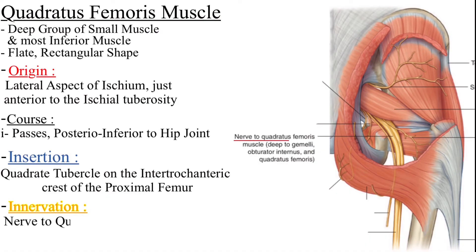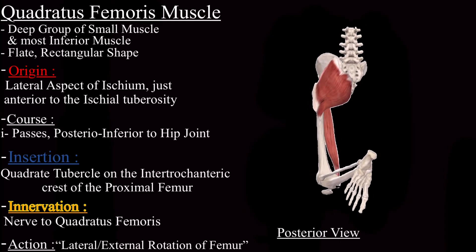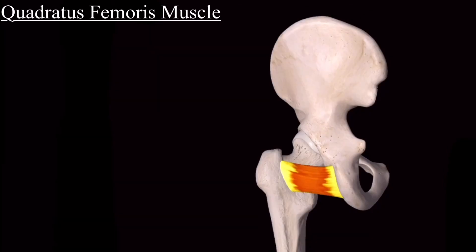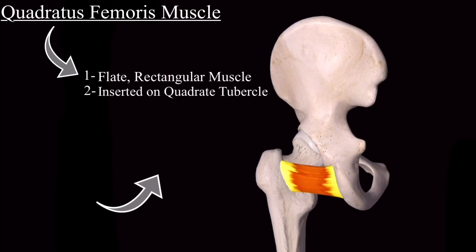It is innervated by the nerve to the quadratus femoris. The main action of this muscle is to laterally rotate the femur at the hip joint. The name 'quadratus femoris' tells us two features: first, it is a flat rectangular-shaped muscle, and second, it is inserted on the quadrate tubercle of the femur bone.